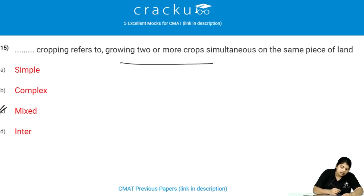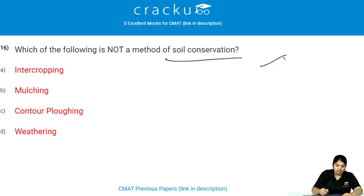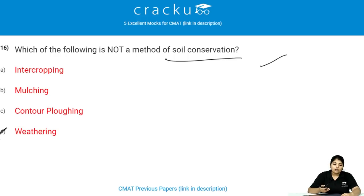Which of the following is not a method of soil conservation? Weathering is not a method of soil conservation, because weathering means the breaking down or dissolving of rocks and minerals into the earth's surface.